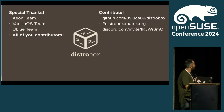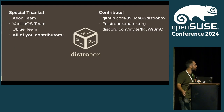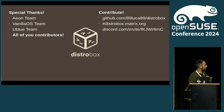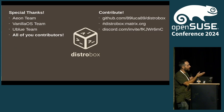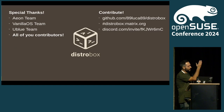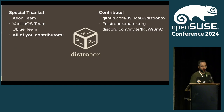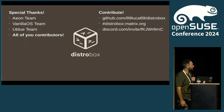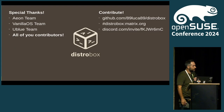Special thanks to the Aeon team, Vanilla OS team, the Ublue team, and all the 150-something contributors that contributed to DistroBox in these two years. DistroBox is on GitHub at 89luca89/distrobox. We have a Matrix channel and a Discord channel. We used to have a Telegram channel, but Telegram didn't like my account, so there isn't one anymore.